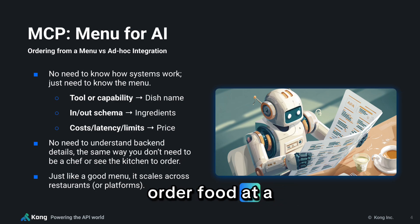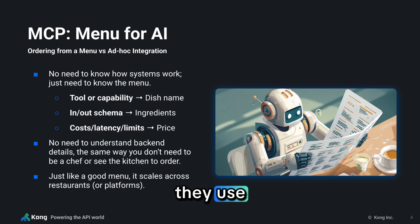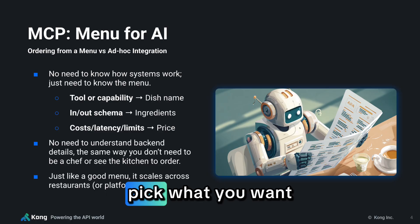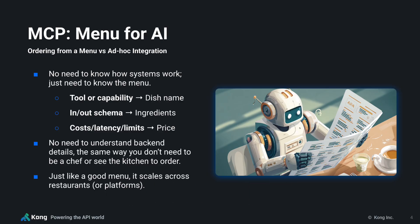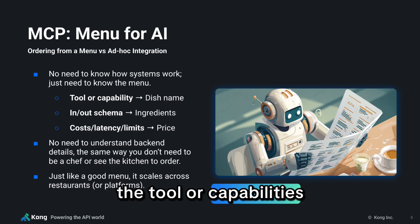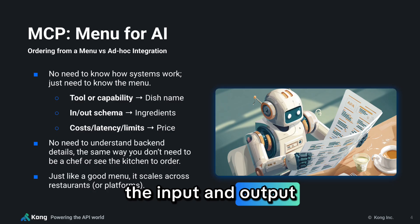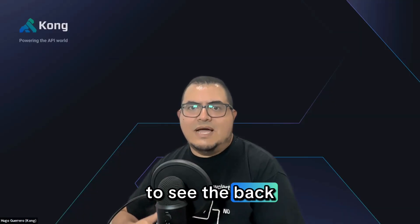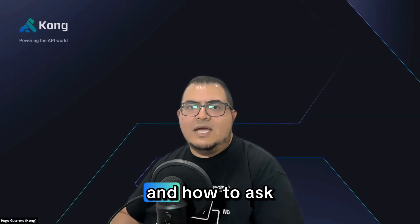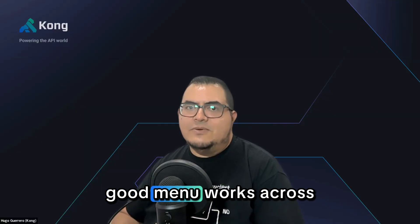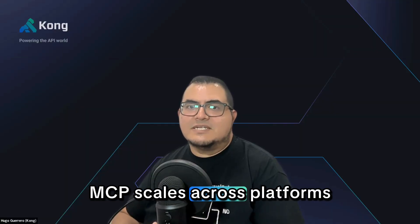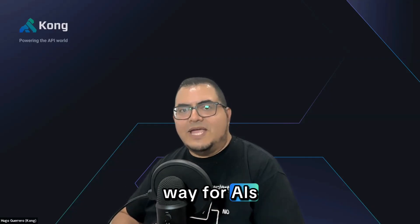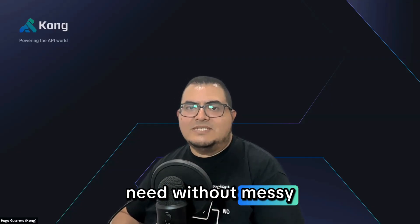Think about how you order food at a restaurant. You do not need to know how the kitchen works or what oven they use. You just look at the menu, pick what you want, and wait for it to arrive. MCP works the same way for AI. The tool or capabilities — like the dish name — the input and output schemas are the ingredients. And the cost, latency, and limits? That's essentially the menu. The AI does not need to see the backend or talk to the chef. It just needs to know what's available and how to ask for it. And just like a good menu works across any restaurant, MCP scales across platforms, giving a consistent way for AIs to order what they need, without messy ad-hoc integrations.